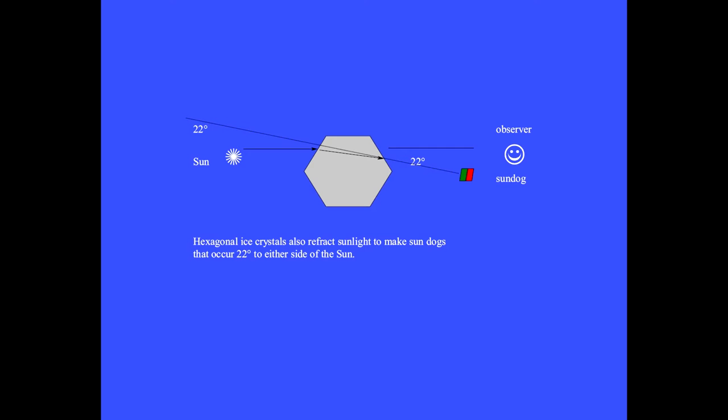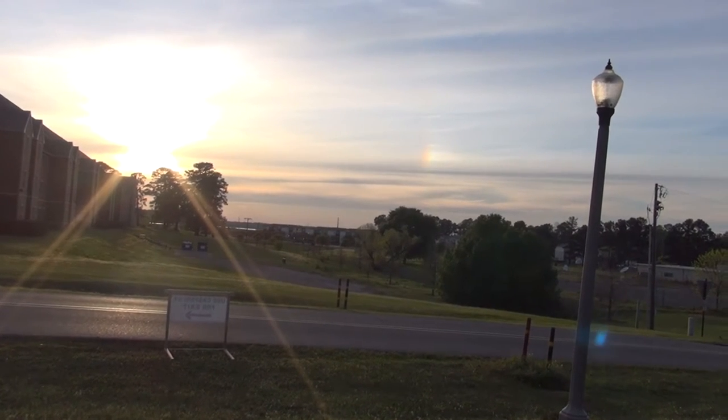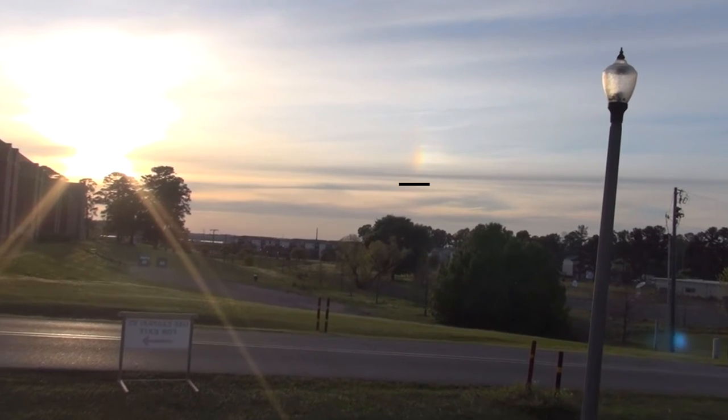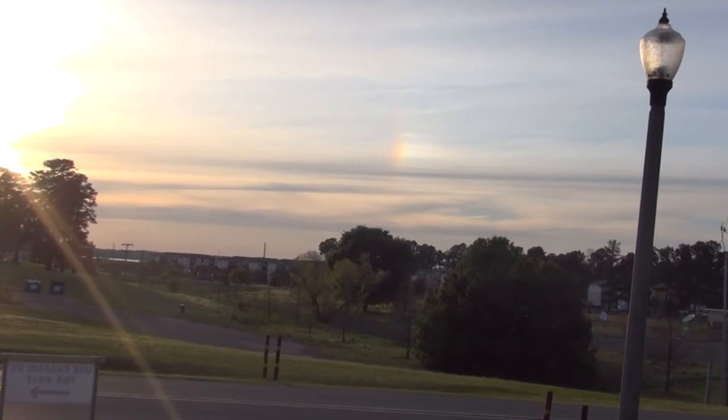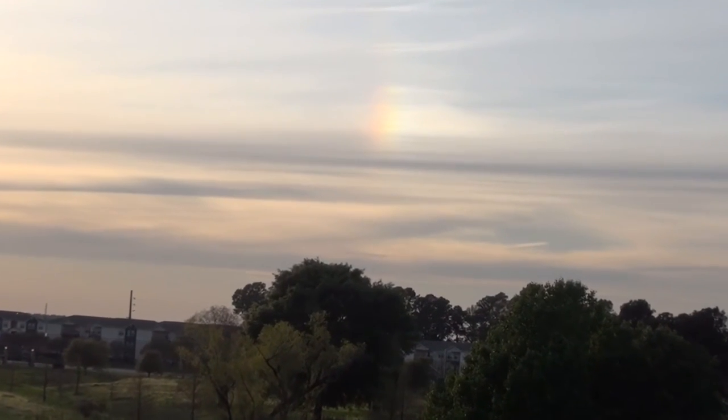Light from the sun enters one face of the crystal and gets refracted by 22 degrees from the sun's forward direction as it exits the other side of the crystal. A sufficient number of these crystals, floating in wispy clouds, produce the so-called sun dog. These can appear 22 degrees from each side of the sun, and are a common sight.